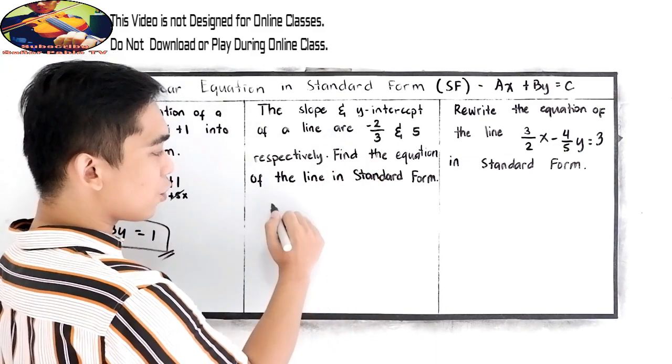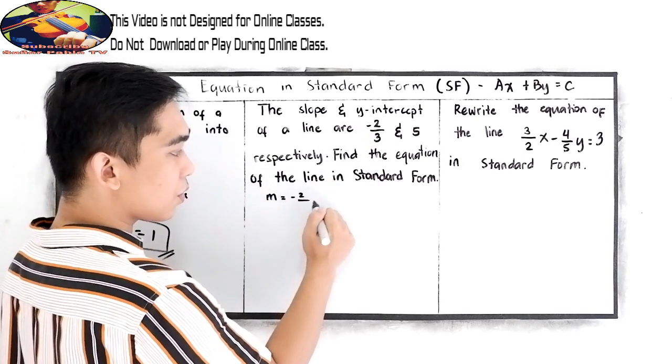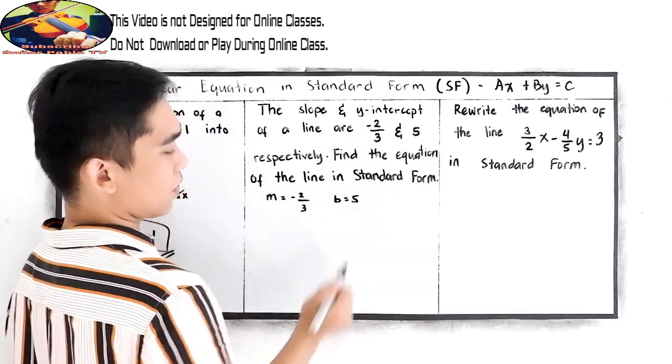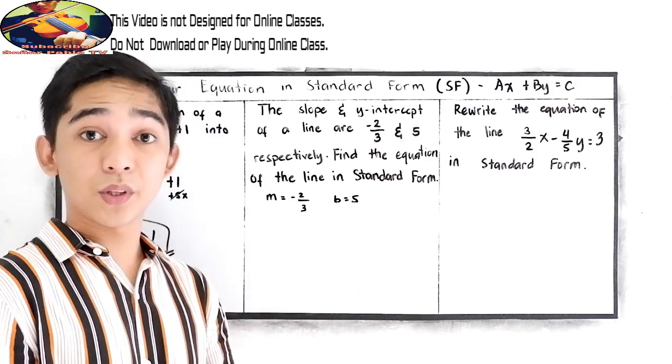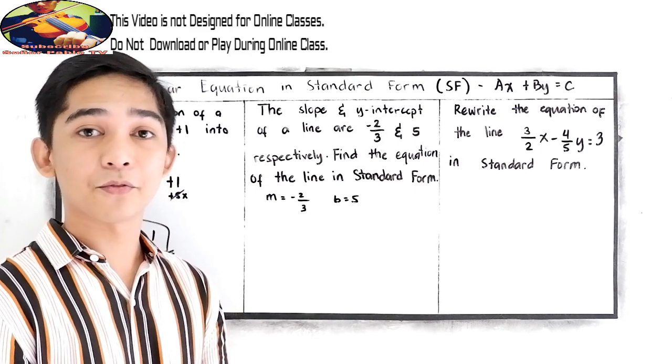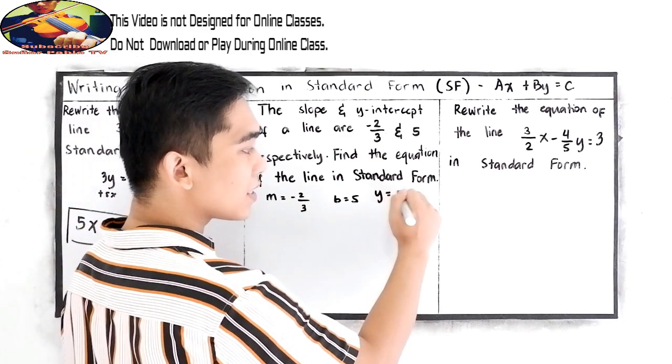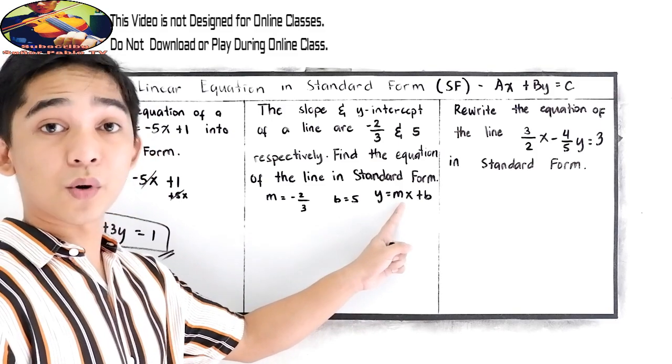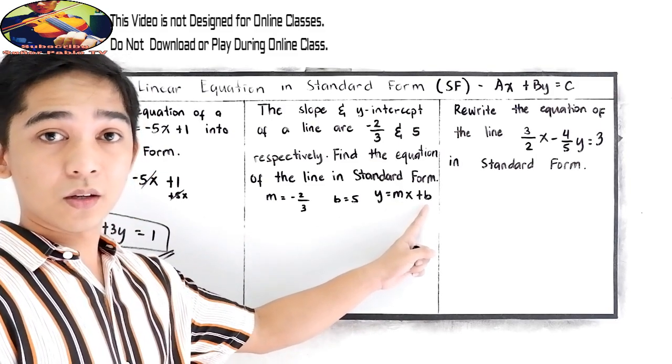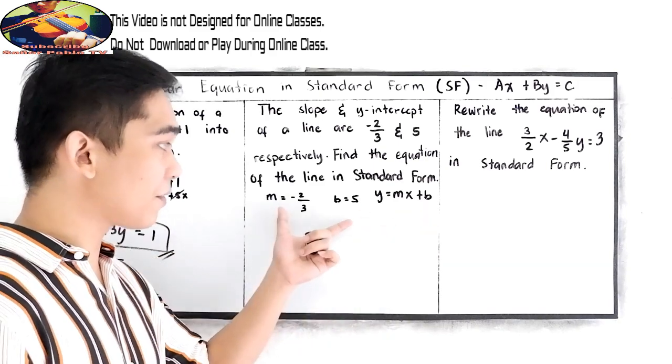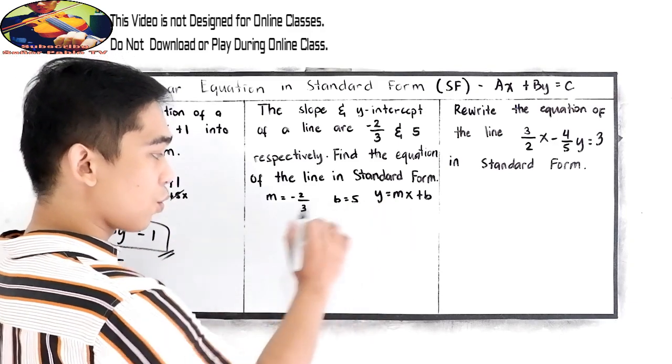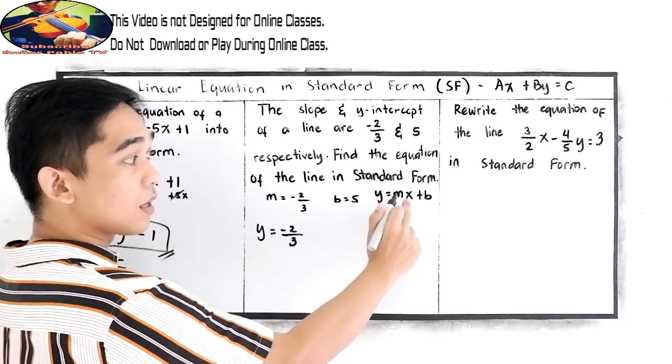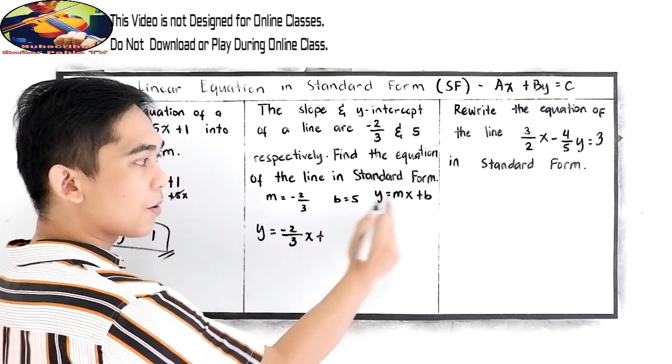We have our slope m = -2/3 and y-intercept b = 5. In our previous lesson, we discussed the slope-intercept form (SIF), which is y = mx + b, where m is the slope and b is the y-intercept. We're going to substitute our given values into the slope-intercept form: y = -2/3 x + 5.